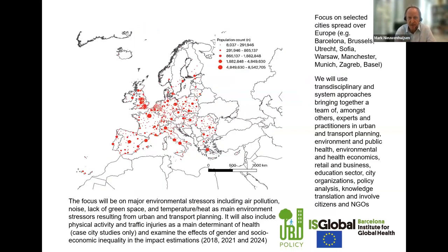These are our thousand cities, spread around Europe. We have a number of case city studies: Barcelona, Brussels, Utrecht, Warsaw, Manchester, Munich, Zagreb, and Basel, and we're always open to include other cities — though unfortunately without funding from our side. For the thousand cities, we're hoping to produce estimates for 2018, 2021, and 2024 for the environmental exposures and mortality estimates, to look at trends over time. We're very keen to work with others in cities and other organizations to bring in knowledge and make an impact.